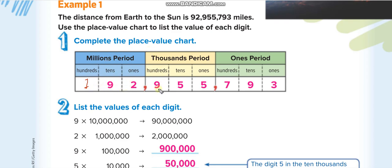For example: 192 millions, then 955 thousands, then 793. For the last period — the ones period — we don't say the name of the period, even while reading place values or reading the complete number. So without the leading digit: 92 millions, 955 thousands, and 793.